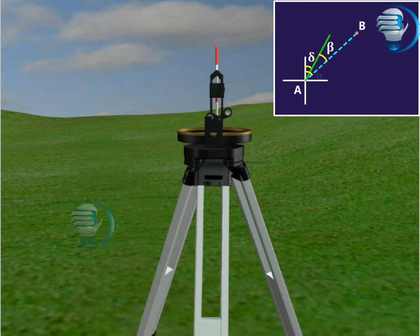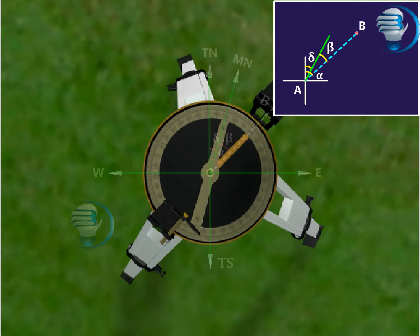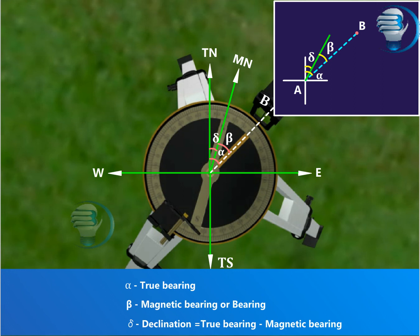The True Bearing Alpha is equal to Magnetic Bearing Beta plus or minus Declination. Therefore, Declination is equal to True Bearing minus Magnetic Bearing.